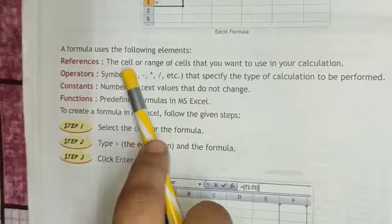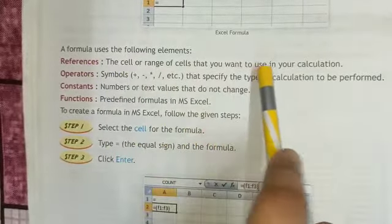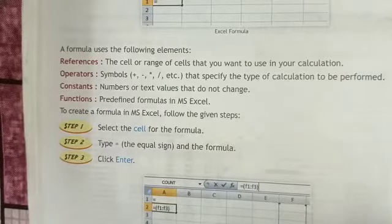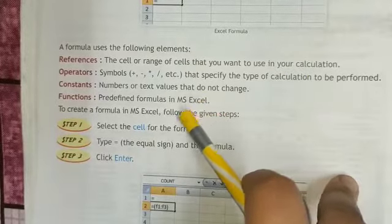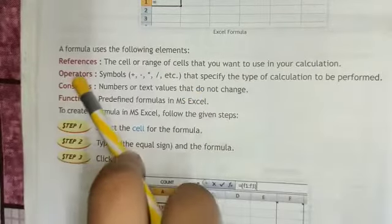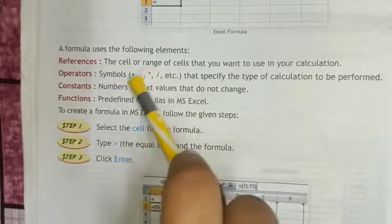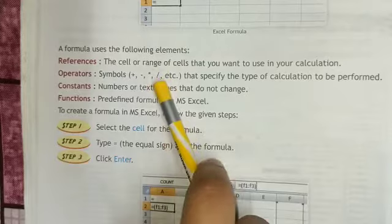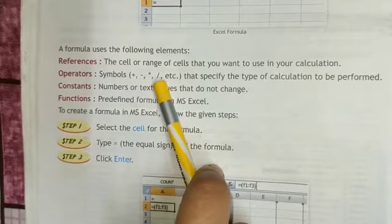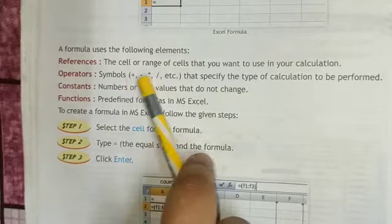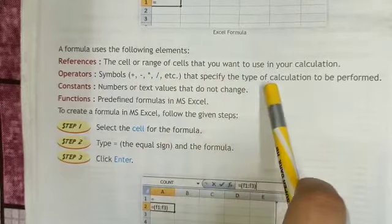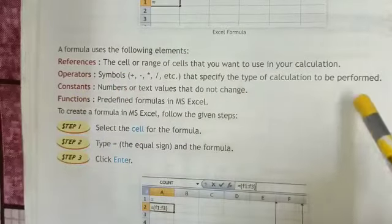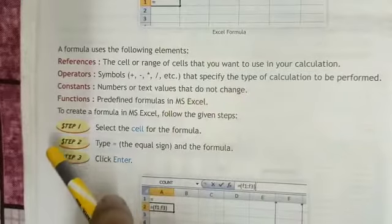References: the cell or range of cells that you want to use in your calculation. Operators: symbols such as plus, minus, multiply, and divide that specify the type of calculation to be performed. The asterisk sign is used for multiplication and the slash sign is used for division.